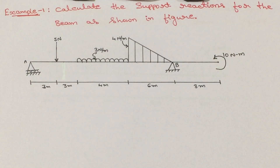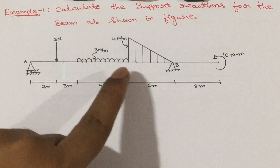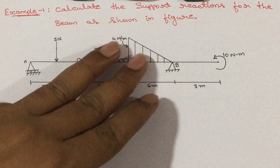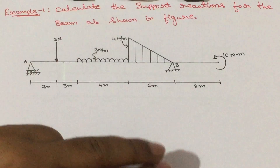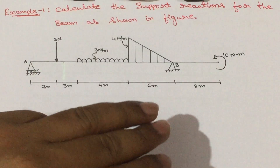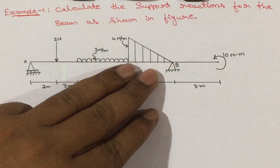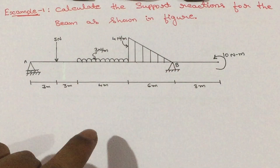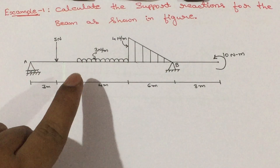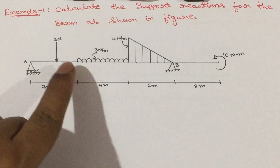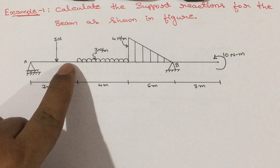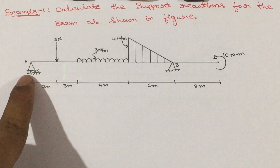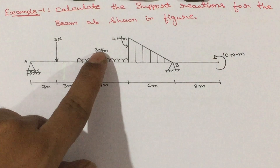I will write the free-body diagram in three simple steps — it will be different from the concurrent force system. The three steps are: first, draw the beam; then the supports; then the loads.